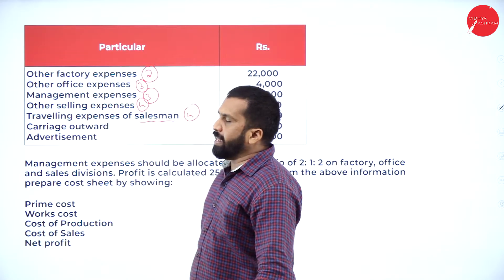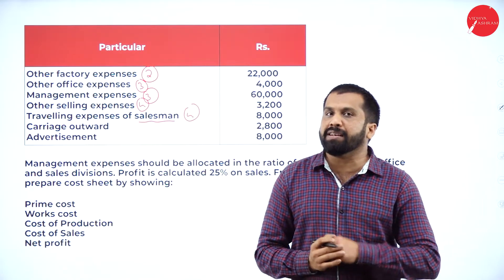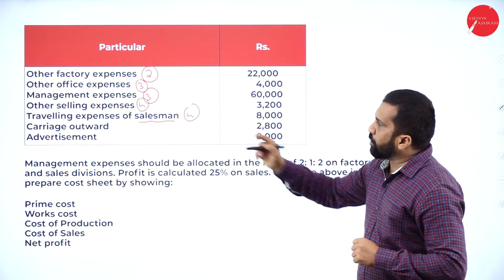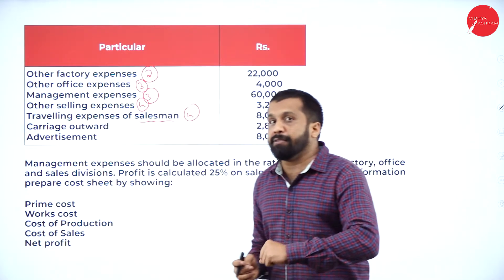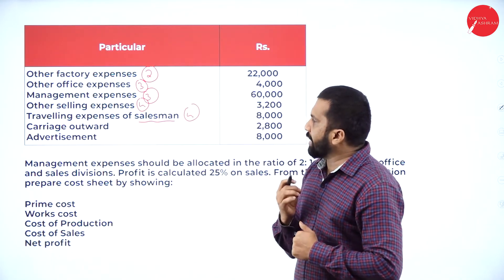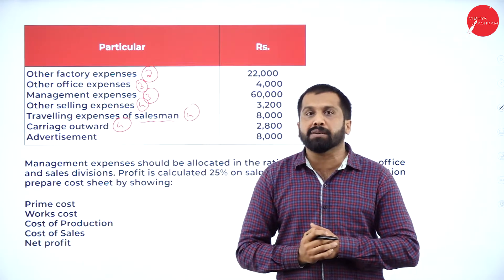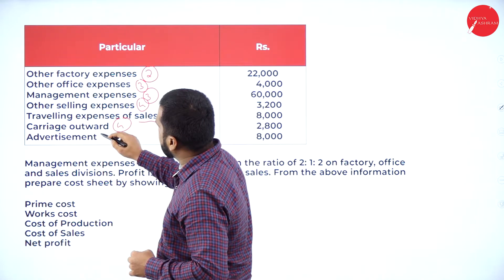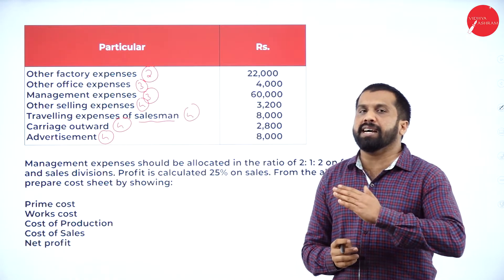Any transportation that happens within the premises, we call it carriage inward. Any transportation that happens outside the premises, we call it carriage outward — for example, manufacturer to wholesaler or manufacturer to retailer. Carriage outward comes under category 4. Advertisement is also related to sales, so advertisement comes under category 4. We have now categorized which items come under 1, 2, 3, and 4.